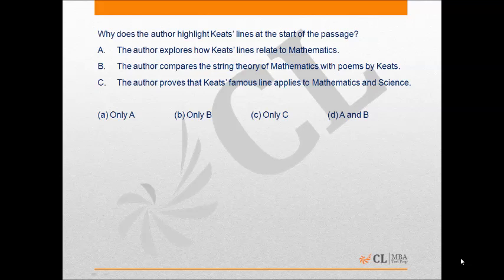Statement C says the author proves that Keats' famous lines applies to mathematics and science. This is also incorrect as the author does not prove anything. He just merely indicates to it. He simply explores the connection between Keats' lines and mathematics. And hence, the correct answer will be only A, which is option A.